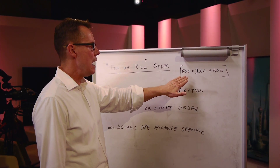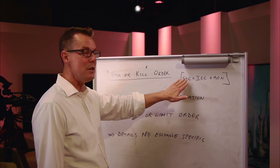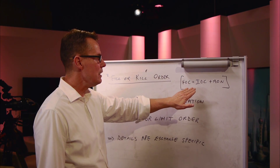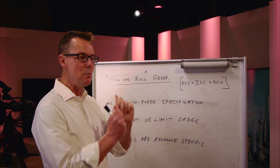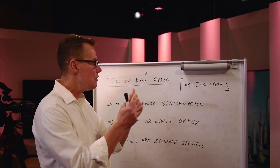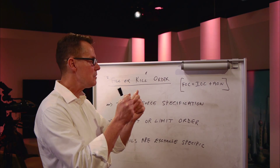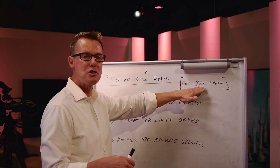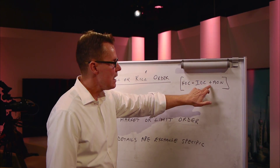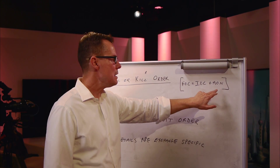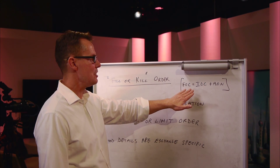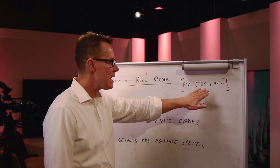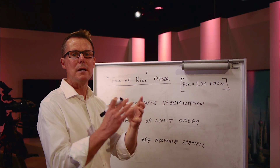A fill or kill order — for example, the one that's traded on the Nasdaq exchange — is equivalent to placing an order which is an immediate or cancel order, which means that when you place the order, if it isn't executed immediately once it arrives on the exchange order book, it's cancelled. Plus an all or nothing order, which means that the order must be executed in its entirety or not at all. So a fill or kill is basically just an immediate or cancel plus an all or nothing order wrapped up into one order.